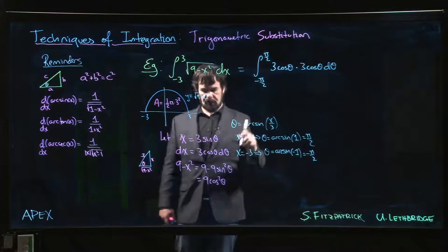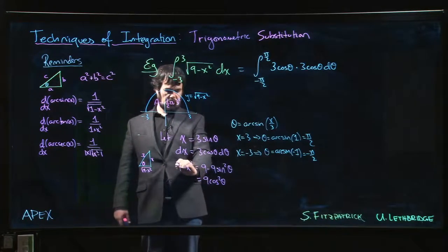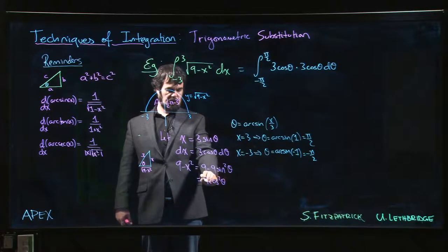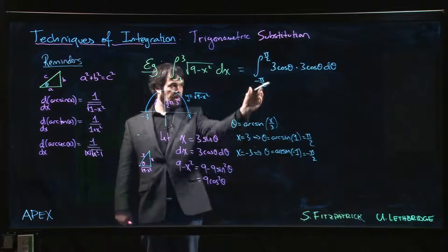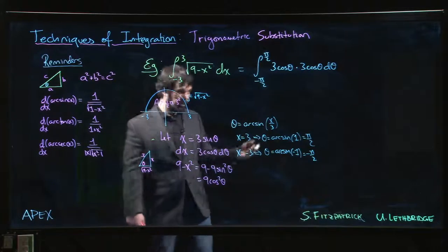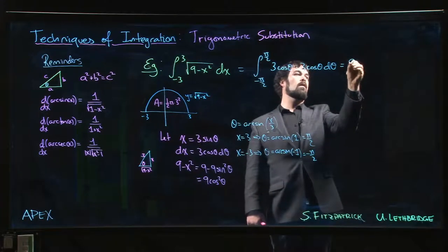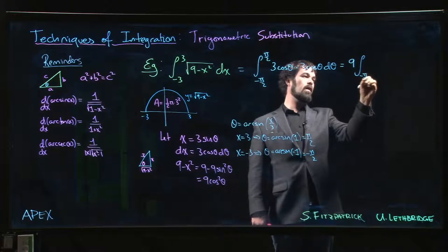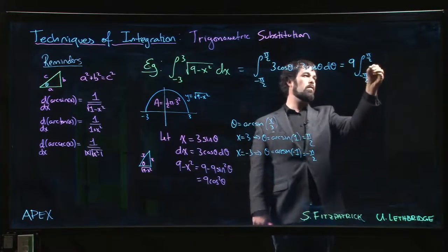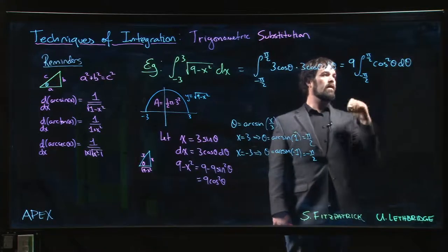So that first 3 cos theta comes from the fact that the square root of 9 minus x squared will be the square root of 9 cos squared, which is the square root of 9 is 3. The square root of cos squared is cos. The other 3 cos theta comes from dx. So I have 9 times the integral from minus pi over 2 to pi over 2 of cos squared theta d theta.